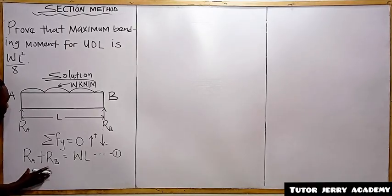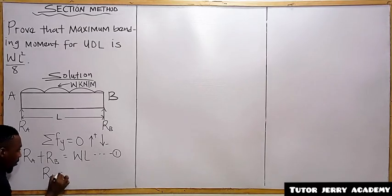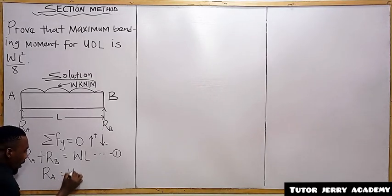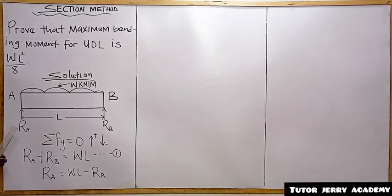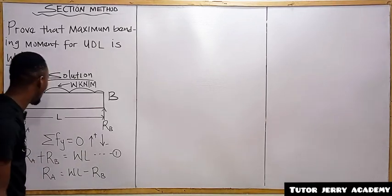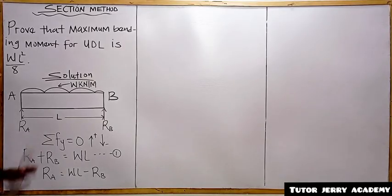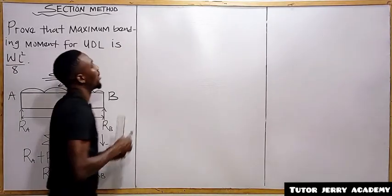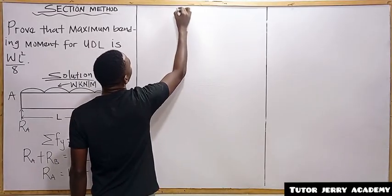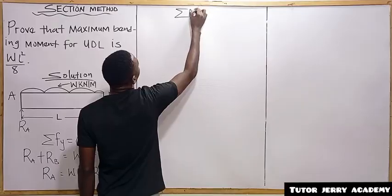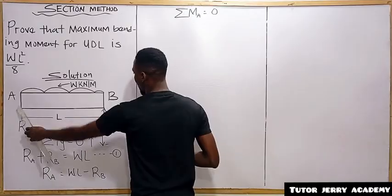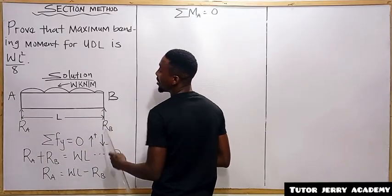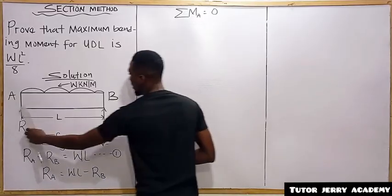We can make RA the subject: RA = WL minus RB. The next thing we are going to do is take the summation of moments about point A, which equals zero. Remember, moment is force times perpendicular distance.